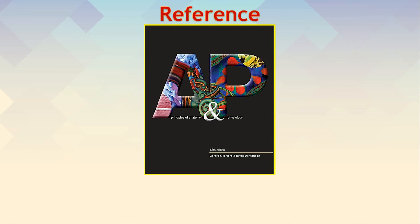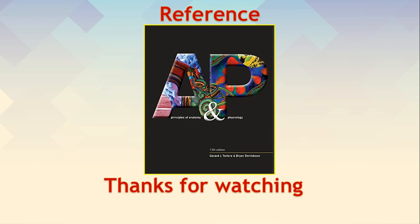We have seen how hormonal control of the testes takes place. The main androgen is testosterone, which also gets converted into dihydrotestosterone. Both these androgens control several functions in the body. Thank you for watching.